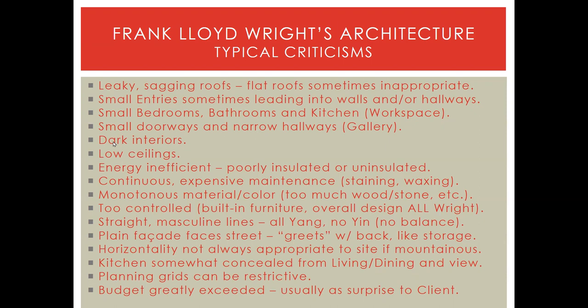Small doorways, narrow hallways are a criticism. Dark interiors — with the brick, the wood, and the Cherokee red concrete floors, sometimes the interiors can be kind of dark despite all of his windows. Low ceilings — Mr. Wright was five feet eight and a half inches tall and designed buildings to the human scale, which in this case was his scale. Some ceilings get to be six feet eight, very low. Energy inefficient, poorly insulated or even uninsulated in a lot of cases — insulation just wasn't in the forefront, and there weren't energy codes then.